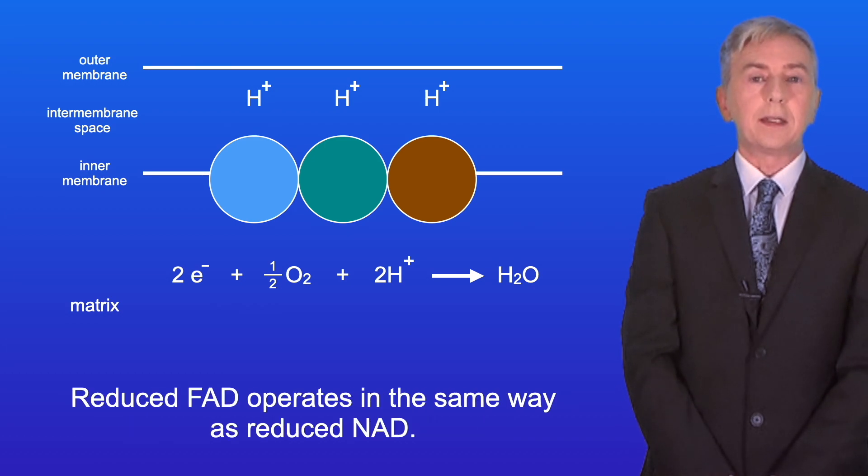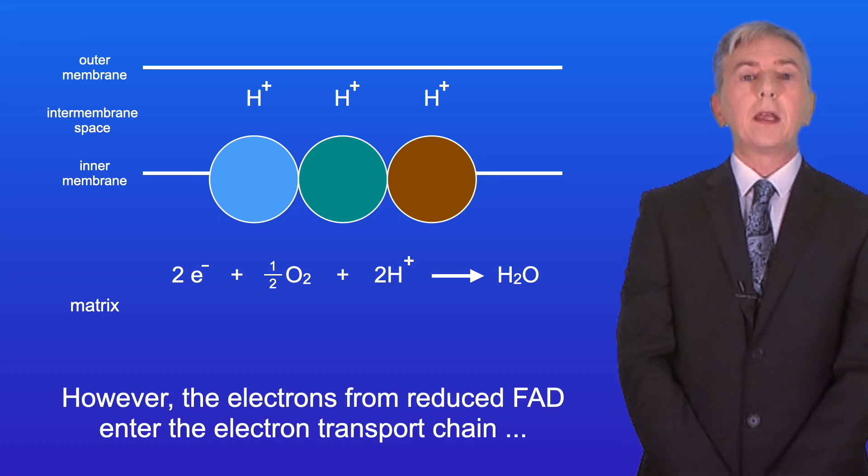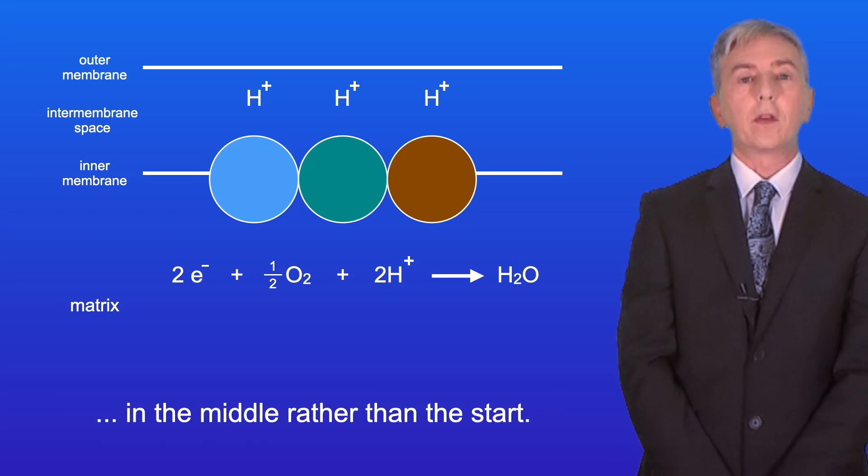Now reduced FAD operates in the same way as reduced NAD. However, the electrons from reduced FAD enter the electron transport chain in the middle rather than the start.